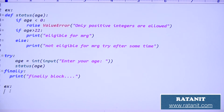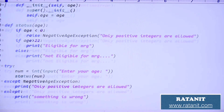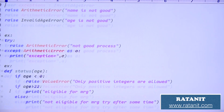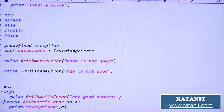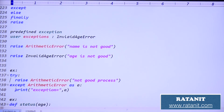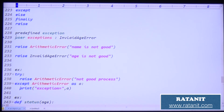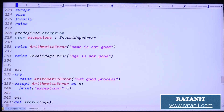That's all about exception handling. In exception handling, how many keywords have we covered? Total five keywords: try, except, else, finally, and raise. We have predefined exceptions and user-defined exceptions. We handle them by using the raise keyword — by raising the exceptions. Points are clear. That's all about exception handling.